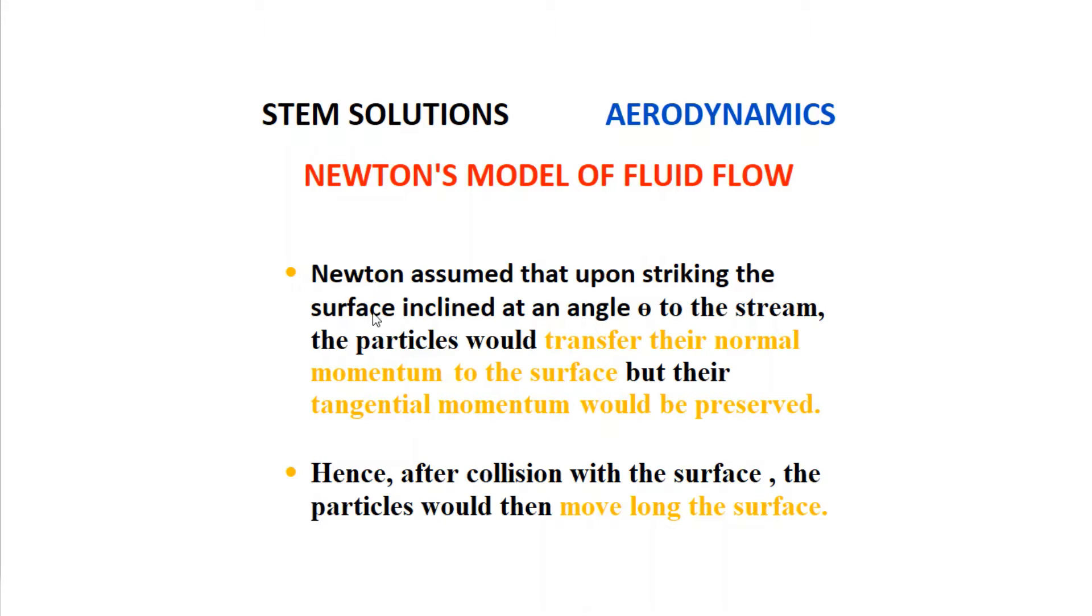You can assume any surface or a wedge of a ship inclined at an angle theta to the stream. The stream is a uniform flow which Newton has assumed of the fluid. The particles would transfer their normal momentum to the surface, but their tangential momentum would be preserved.